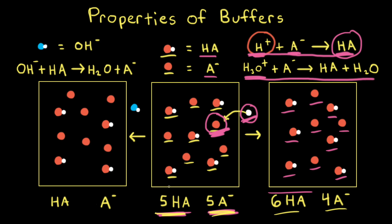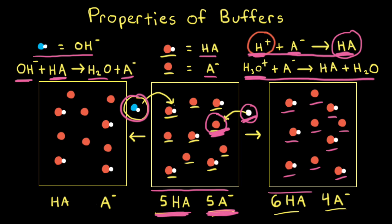Next, let's go back to our middle particulate diagram with five HA and five A-minus, and this time let's try adding some hydroxide ions to the solution. We're going to add a small amount of base to our buffer solution. The hydroxide anion will react with the weak acid HA that is present to form H2O and A-minus. For the particulate diagrams, we can think about this OH- reacting with one of the HA's to form H2O and an A-minus.